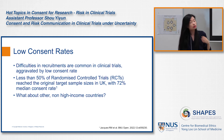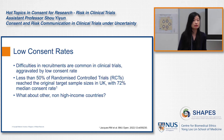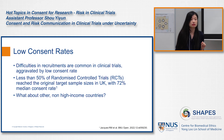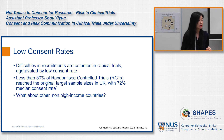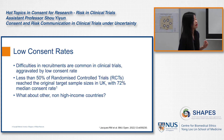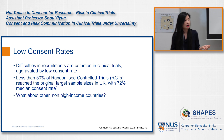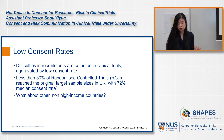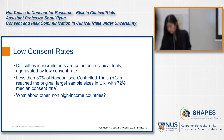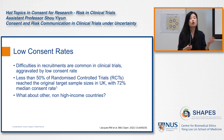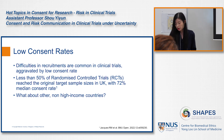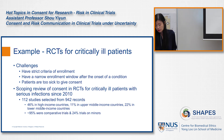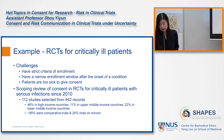In our research on randomized controlled trials conducted in the UK over the past two decades, they found that less than half of the trials actually reached the original target sample size, and the median consent rate is only about 72%. This systematic review was done in the UK context. For other countries, especially non-high-income countries, we focused our research on RCTs for critically ill patients.